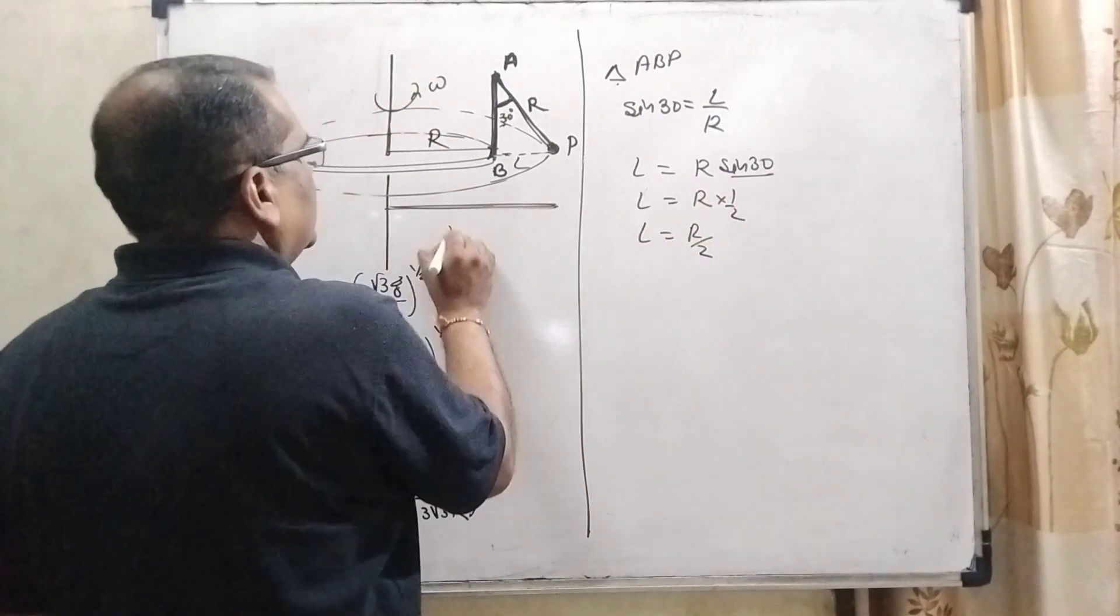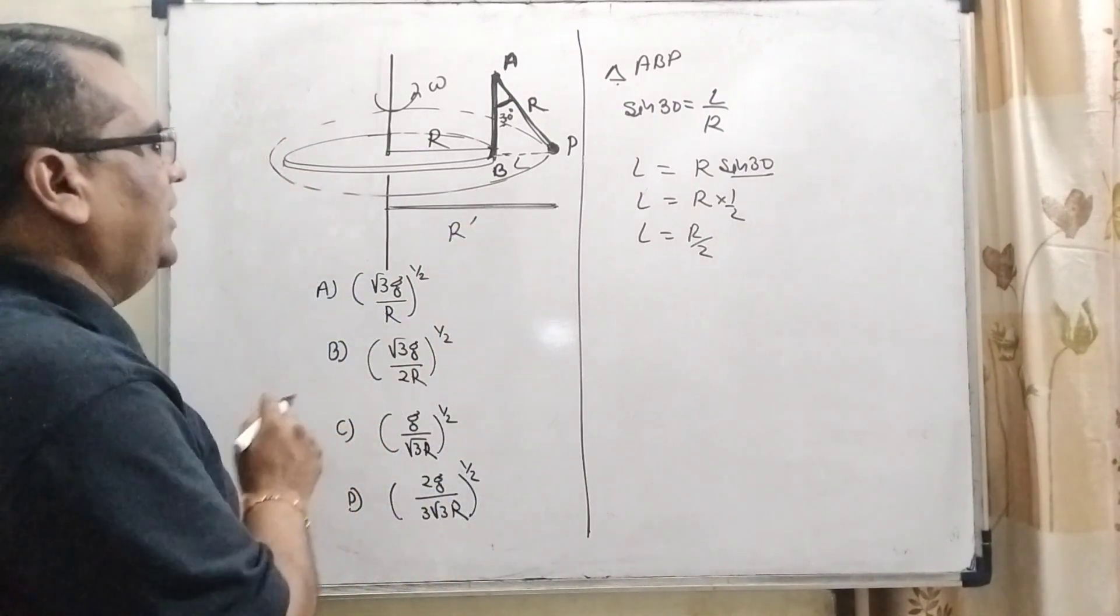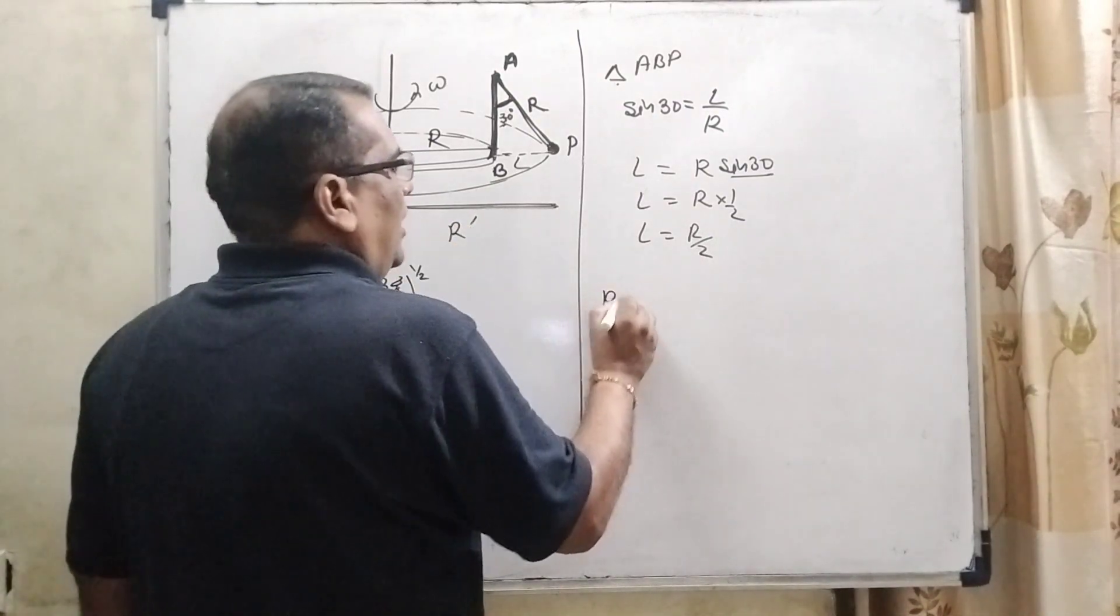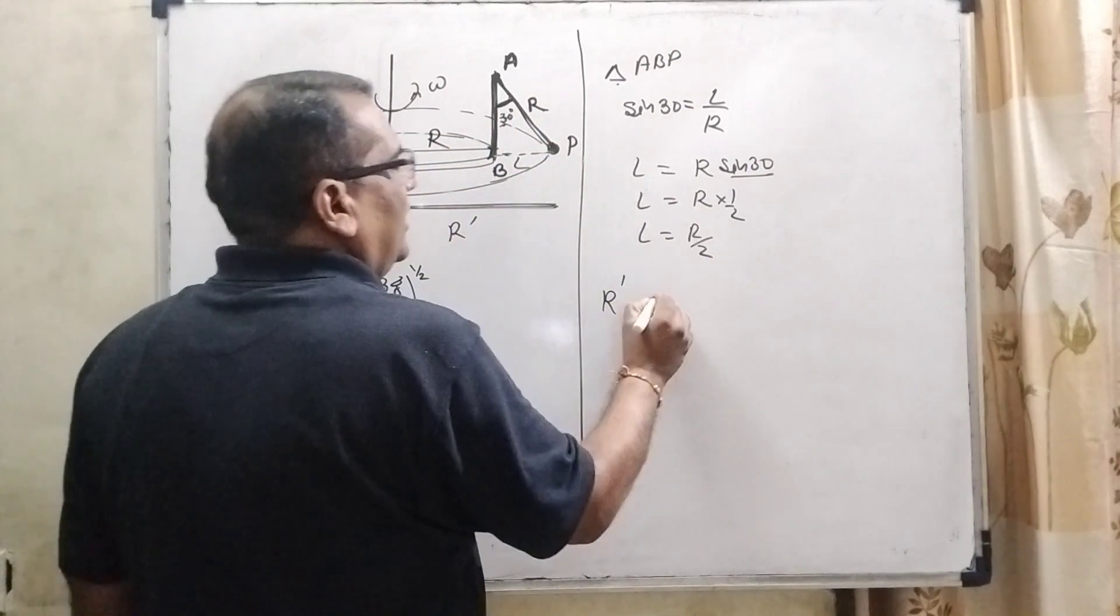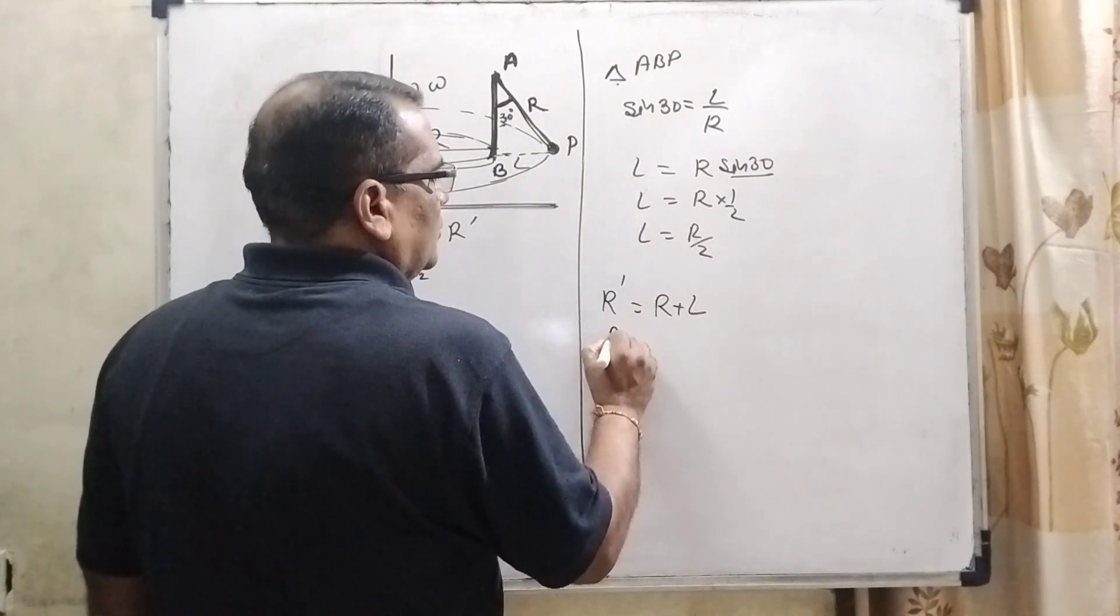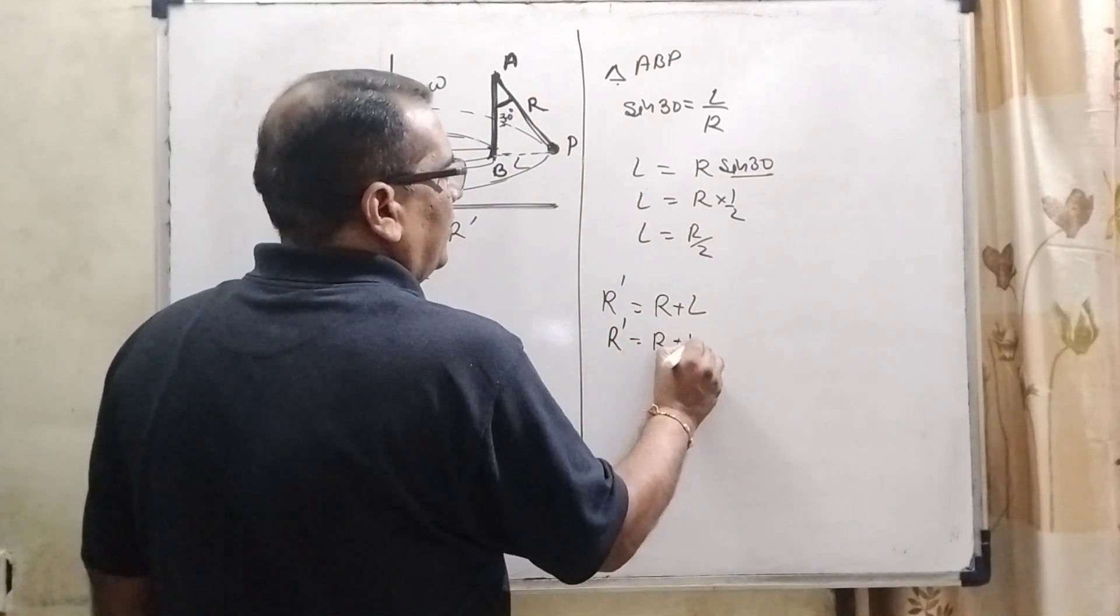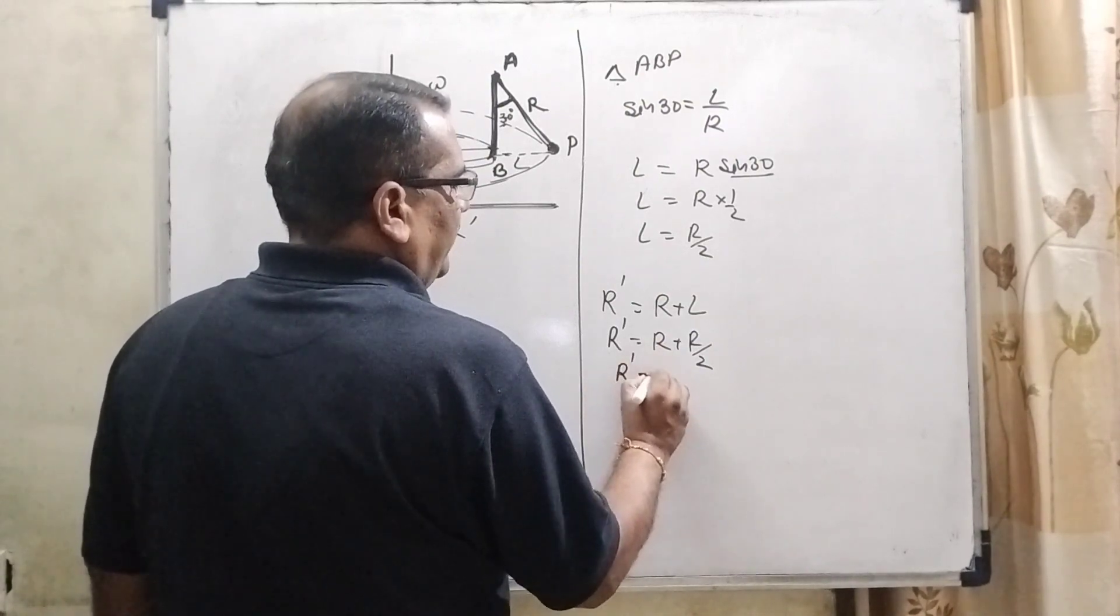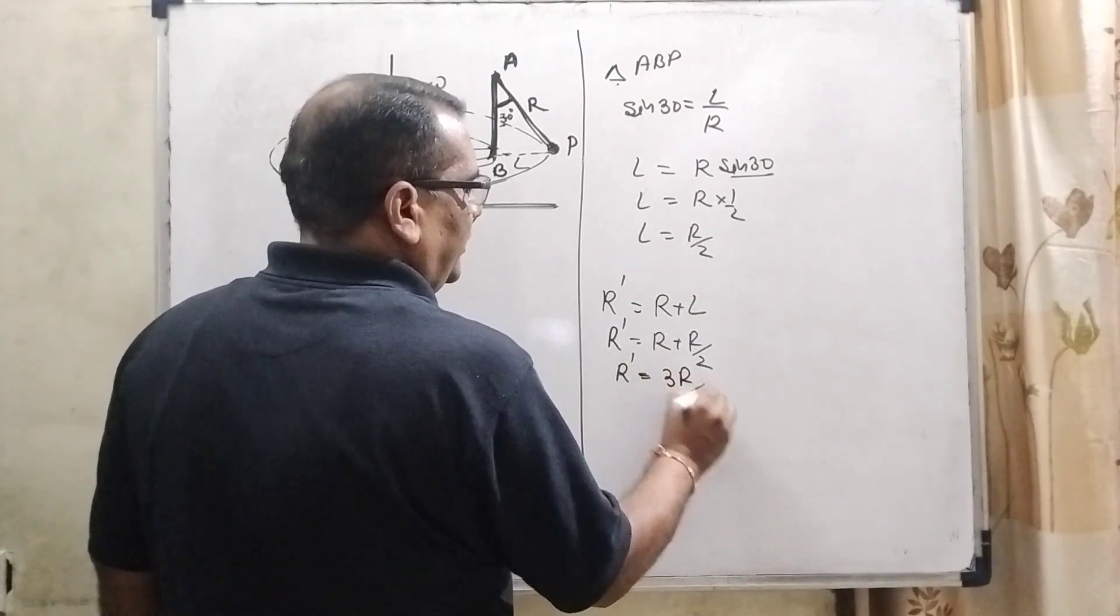Now, effective radius here R dash. Effective radius is R dash. So, R dash equal to R plus L. So, now R and R by 2. Then effective radius becomes 3R by 2.